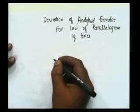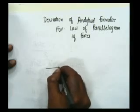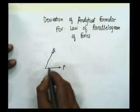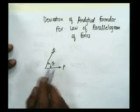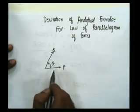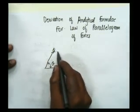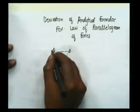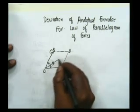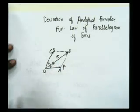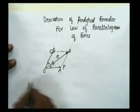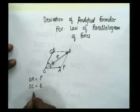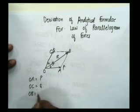Let us consider two coplanar concurrent forces. Let the first force be P and the other be Q, with the angle between these two forces equal to theta. As per the law of parallelogram of forces, if these two forces are taken as two adjacent sides of a parallelogram OABC, then the diagonal passing through point O gives the resultant. OA represents force P, OC represents force Q, and diagonal OB represents resultant R.